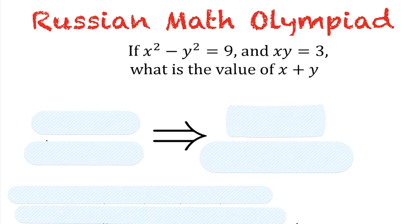Okay, we're going to be taking a look at a Russian math Olympiad question. They're giving us the following: we know that x squared minus y squared is equal to 9, and the product of x and y is 3. What they want us to find here is the sum of x and y. That's our goal.